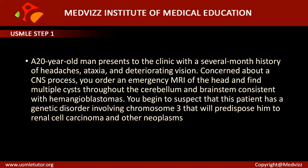Whenever you see headaches, ataxia, and deteriorating vision with concern for a CNS process, an MRI showing multiple cysts throughout the cerebellum and brain stem consistent with hemangioblastomas is the typical picture of Von Hippel-Lindau. This patient has a genetic disorder involving chromosome 3, because the VHL gene — the Von Hippel-Lindau gene — is a tumor suppressor gene.